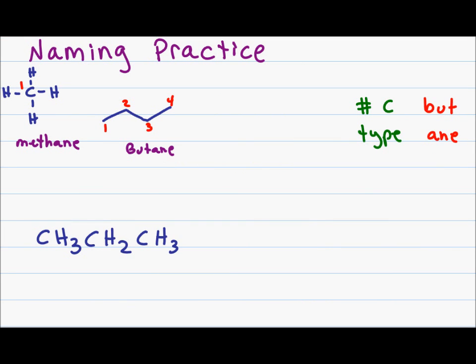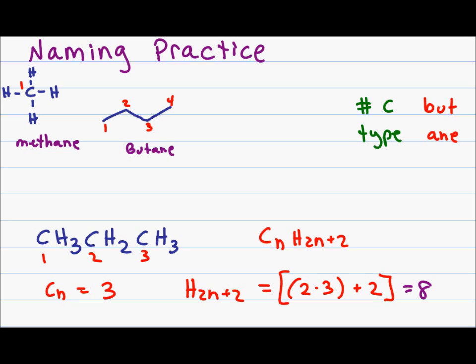Given the condensed formula for this molecule, I first have to verify that it's indeed an alkane as opposed to an alkene or an alkyne, and I will use the formula CnH2n+2. If I count the carbons, I have 1, 2, 3. For hydrogens, I expect to have H2n+2, that's 2 times 3 plus 2, giving me a total of 8.